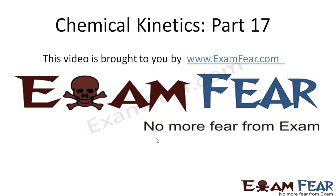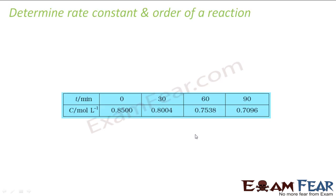Hello friends, this video on chemical kinetics part 7 is brought to you by examfia.com. Let's see different ways how to calculate the rate constant and order of a reaction given we have some data. This is experimental data where some experiment was performed showing the concentration of a reactant at different intervals of time. With this data, we have to find whether it is a first-order, second-order, or third-order reaction. There are three different ways to find the rate constant and order of a reaction given experimental data.